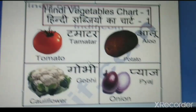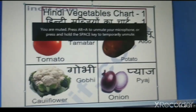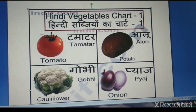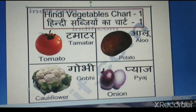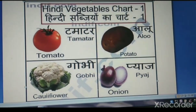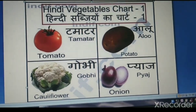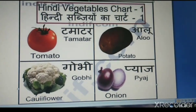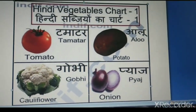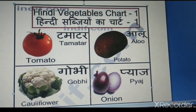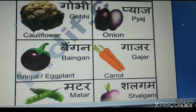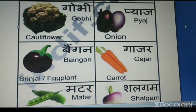Hi guys, welcome to Hudson's channel. Today we are going to see Hindi vegetables chart one. Tomato means tamatar, potato means aloo, cauliflower means gobhi, onion means pyaz, brinjal means baingan.